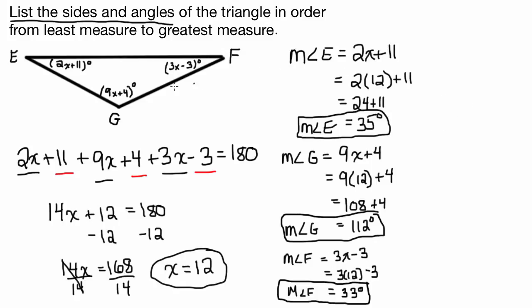So now if we're going to list the angles and sides of a triangle in order from least measure to greatest measure, I would do angles. So the smallest is 33 degrees and that's angle F. And then the next smallest angle is going to be the 35 degree angle, which is angle E. And then that leaves us with angle G, which is 112 degrees, as the largest angle. And then I would box this nice and big so I clearly know that that's one of the answers.